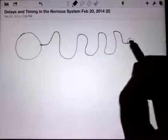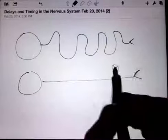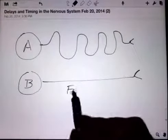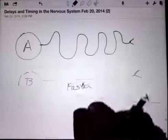So the simplest way is just to have different length axons. One long axon is going to be a lot slower than a short axon. The lower one here is much shorter.